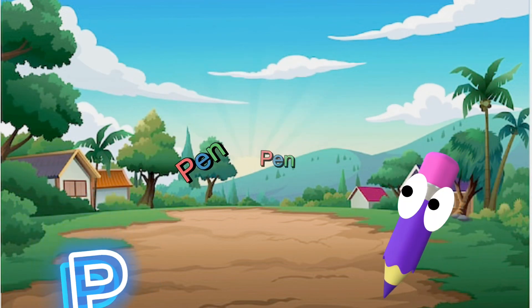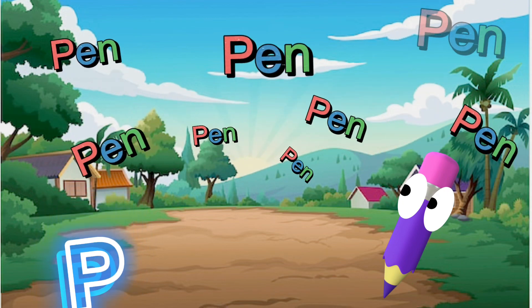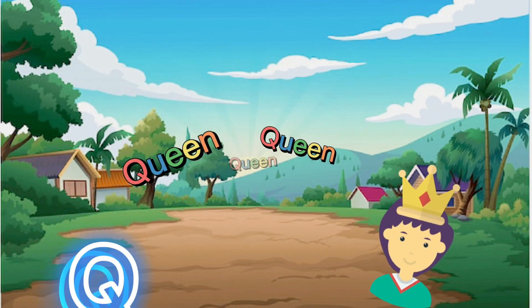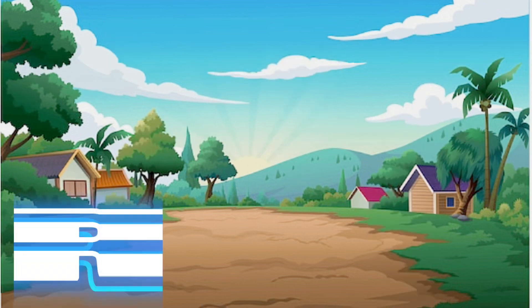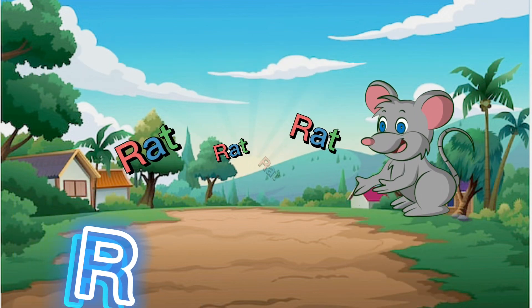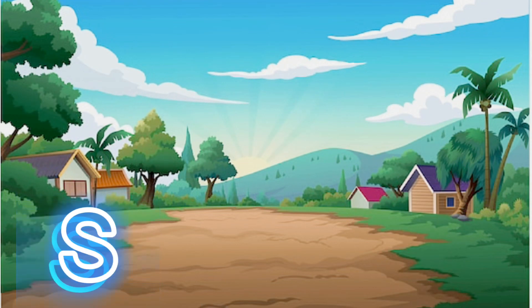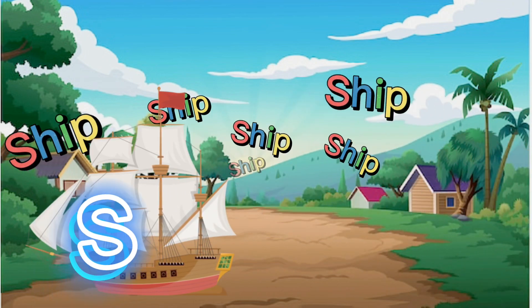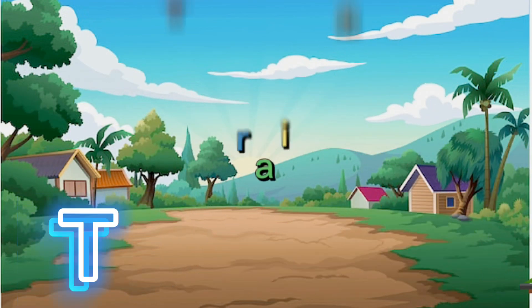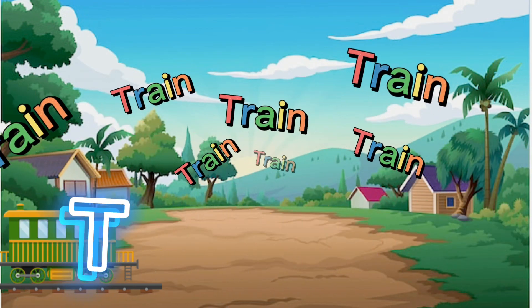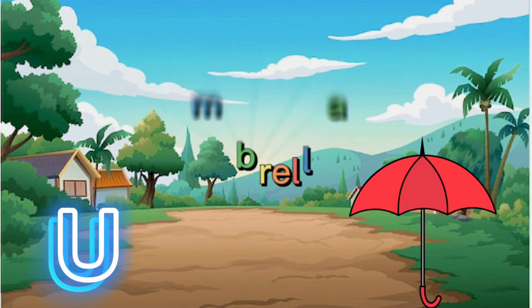P for pen, Q for queen, R for rat, S for sheep, T for train, U for umbrella.